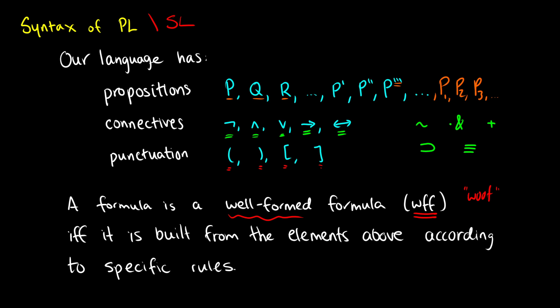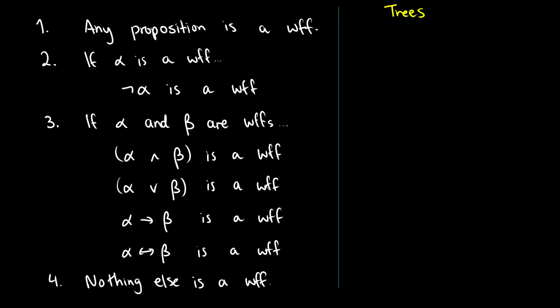It's a well-formed formula if and only if it is built from the elements above according to specific rules. If we have something that's not in this language, or if it violates the rules, then it's not a well-formed formula. The first rule is that any proposition is a well-formed formula — so P, Q, R, S, or P prime are all well-formed formulas.